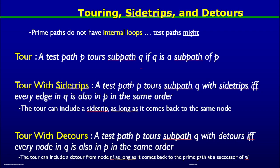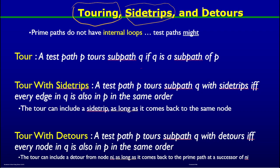These concepts are called touring. We have seen the definition of touring earlier, but there are two more related concepts: one is called touring with side trips, and another one is called touring with detours. First, let's recap the definition of a tour.